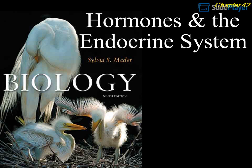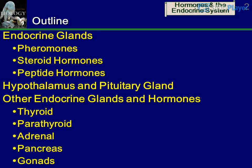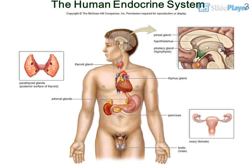Biology, 9th edition, Sylvia Mader. Chapter 42: Hormones and the Endocrine System. Topics include: Hypothalamus and Pituitary Gland, Other Endocrine Glands and Hormones. Outline covers: Endocrine Glands, Pheromones, Steroid Hormones, Peptide Hormones, Hypothalamus and Pituitary Gland, Other Endocrine Glands including Thyroid, Parathyroid, Adrenal, Pancreas, and Gonads — the Human Endocrine System.